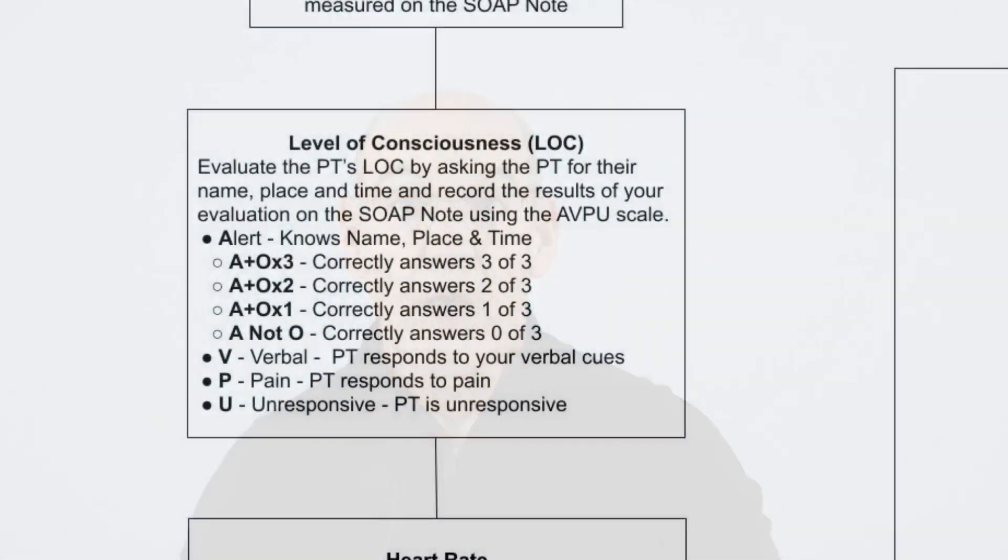U — Unresponsive: The most concerning level is when the patient is unresponsive to both verbal commands and painful stimuli. This indicates a profound impairment of brain function requiring immediate medical attention. An unresponsive patient shows no reaction to external stimuli, verbal or physical.